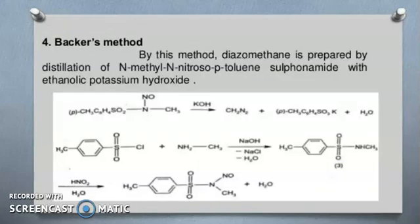Baker's method. By this method, diazomethane is prepared by distillation of N-methyl N-nitroso-p-toluene sulfonamide with ethanolic potassium hydroxide. You can see the reactions.